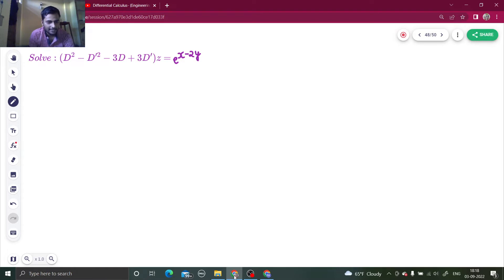Before finding the complementary function, we have to factorize this. This we can write as a square minus b square. So, a plus b taking the first two term and a minus b. And if I take minus 3 common...